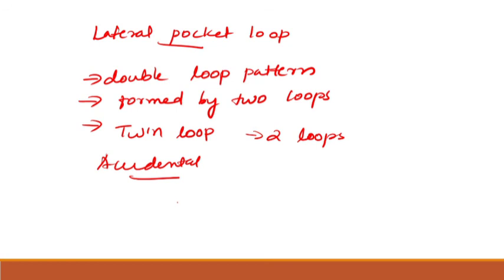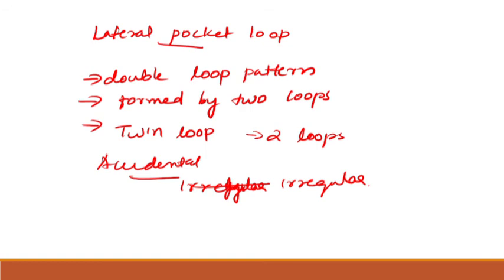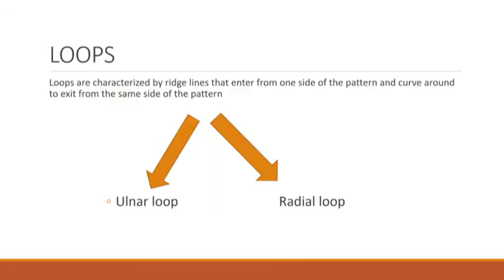Accidental patterns are those too irregular to be placed in any of the above categories. They are formed by the combination of any two different types of patterns, except a combination where one of the patterns is an arch. When a loop pattern is formed over a plain arch, it is interpreted not as an accidental but as a newton loop. These are the fingerprint patterns — next class we will continue.